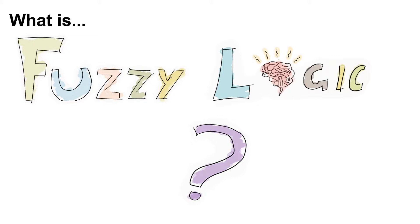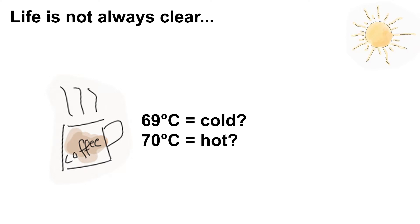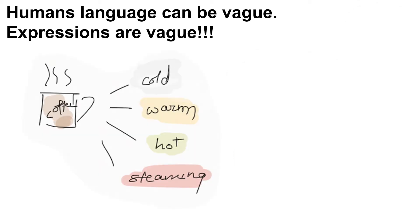Imagine, on a sunny day, I would love to have a cup of hot coffee. What is hot? Is it 69 or 70 degrees Celsius? If I say 70, does it mean 69 degrees Celsius will be cold? No, life is not always crisp and clear.